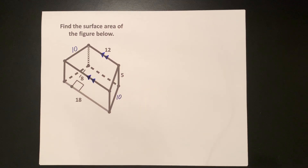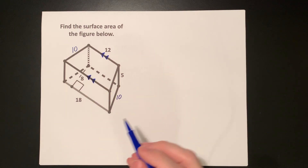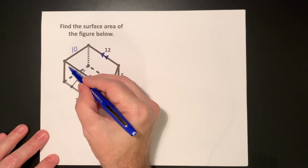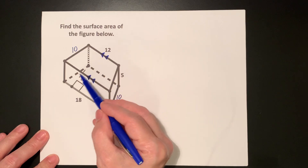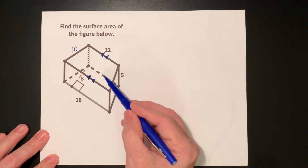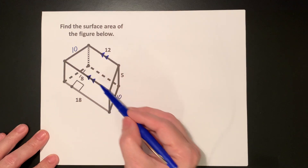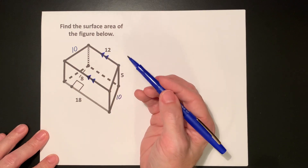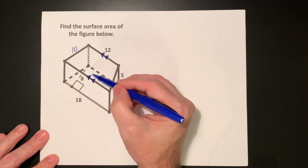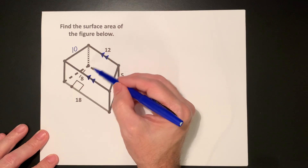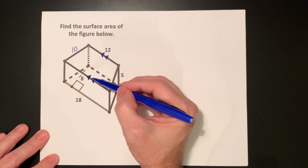Welcome to TeacherMind. In this video we are going to be finding the surface area of a prism. Our prism here has a trapezoid for a base. Notice that there's a trapezoid at one end and a trapezoid at the other end. I know it's a trapezoid because it has one pair of parallel sides — notice the markings of being parallel.